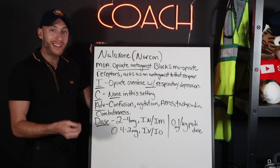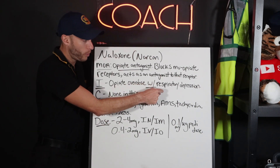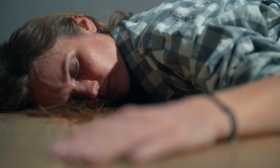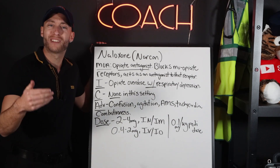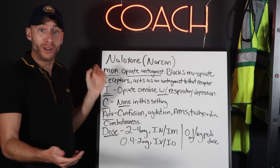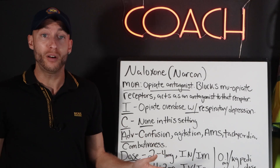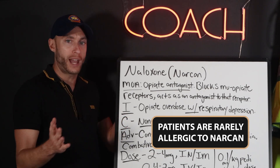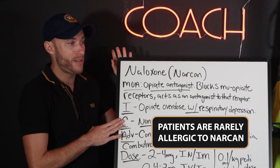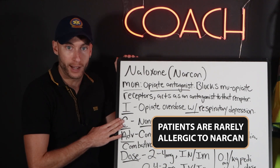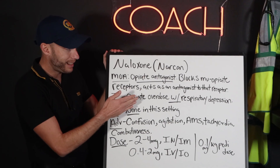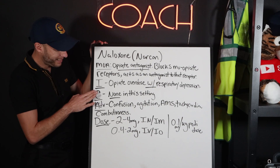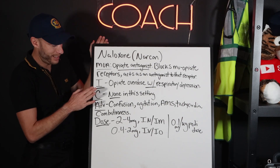Now, contraindications. In the setting where your patient has respiratory depression and they're either in respiratory arrest — meaning they're not breathing, they're apneic — or they have very slow, sluggish respirations, there's nothing that's going to stop us from giving Narcan. This patient needs it. It's very rare to have an allergy — I've never heard of one patient in my career having an allergy to Narcan. That would be an edge case. In this setting, this is a life-threatening situation. We've got to give Narcan.